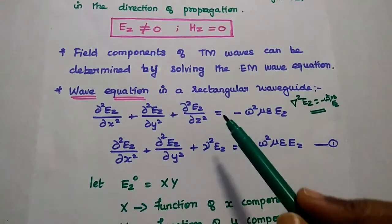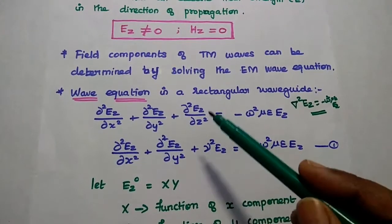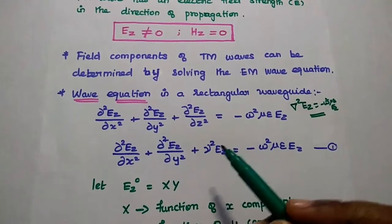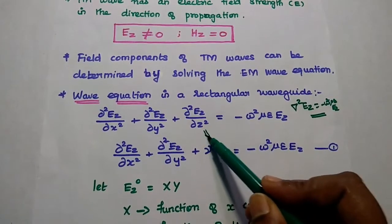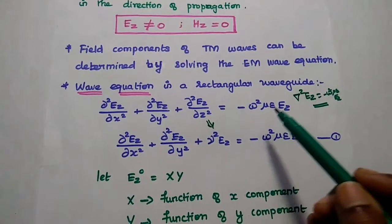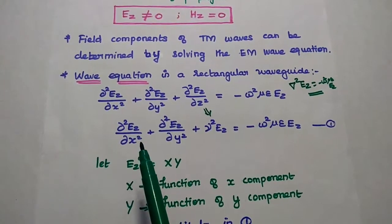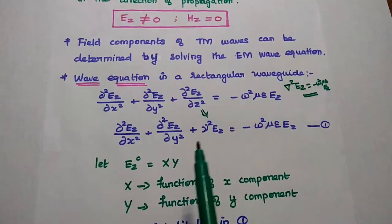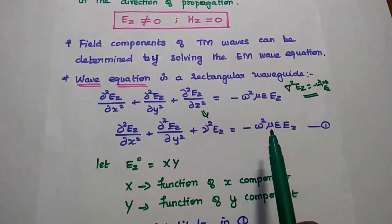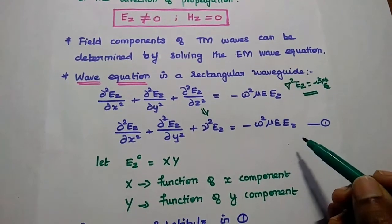The derivative of EZ in the Z direction is represented with its propagation constant, so this term can be represented as gamma squared EZ. Then this wave equation can be written as: dou squared EZ by dou x squared plus dou squared EZ by dou y squared plus gamma squared EZ is equal to minus omega squared mu epsilon EZ. Consider this as the first equation.